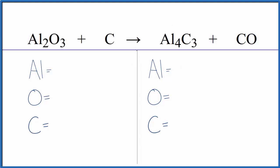To balance the equation, it's a little bit of a challenging equation. Let's first count the atoms up. We have two aluminum, three oxygen, one carbon on the reactant side. Product side: four aluminum, one oxygen, and three carbons.